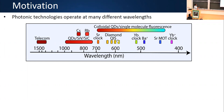Going to somewhat longer wavelengths but still in the visible, we have different color centers in diamond and different single molecule systems. Going into the short near infrared, we have epitaxial quantum dots, alkali atoms, and other color centers in silicon carbide. And of course in the telecom band around 1.55 microns, that's where you have your lowest propagation losses for light going through optical fibers.